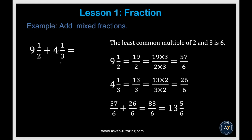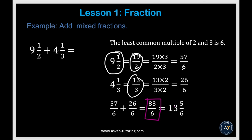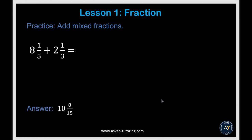Now we'll learn how to add mixed fractions. First, convert the mixed numbers to improper fractions. For 9 and 1 half: 9 times 2 is 18 plus 1 is 19 over 2. And 4 and 1 third becomes 13 over 3. Find the common denominator of 6, multiply to get equivalent fractions — 57 over 6 and 26 over 6 — and add them to get 83 over 6. Convert to a mixed number: 13 and 5 over 6. Try the practice problem and if you don't get the right answer, go back and review the previous example.